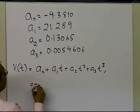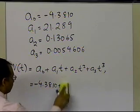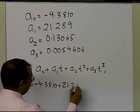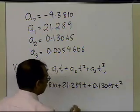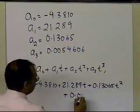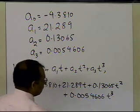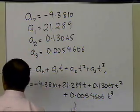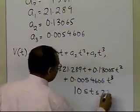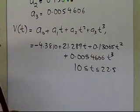So the interpolant is: −4.3810 + 21.289*t + 0.13065*t² + 0.0054606*t³. Keep in mind that this interpolant is valid between t = 10 and t = 22.5, because those are the lowest and highest values of t used to calculate this third-order interpolant.